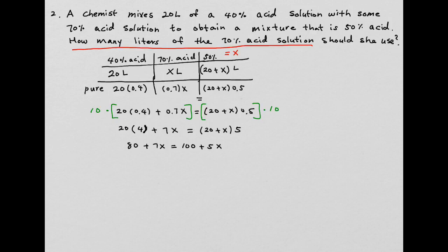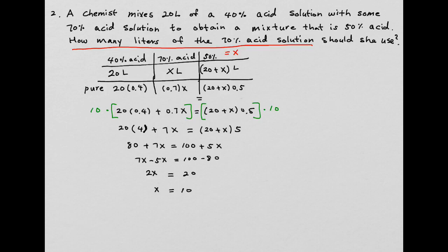Putting variable terms together: 7X − 5X = 100 − 80. When you move terms to the other side, remember the sign changes. So I get 2X = 20. Divide both sides by 2, and X = 10. X was the amount of 70% acid solution. So you will need 10 liters of 70% solution.